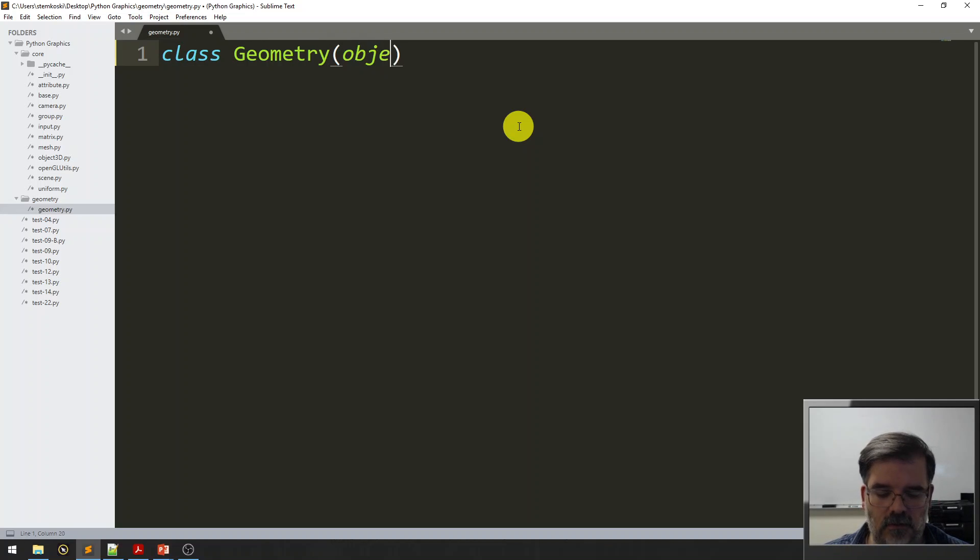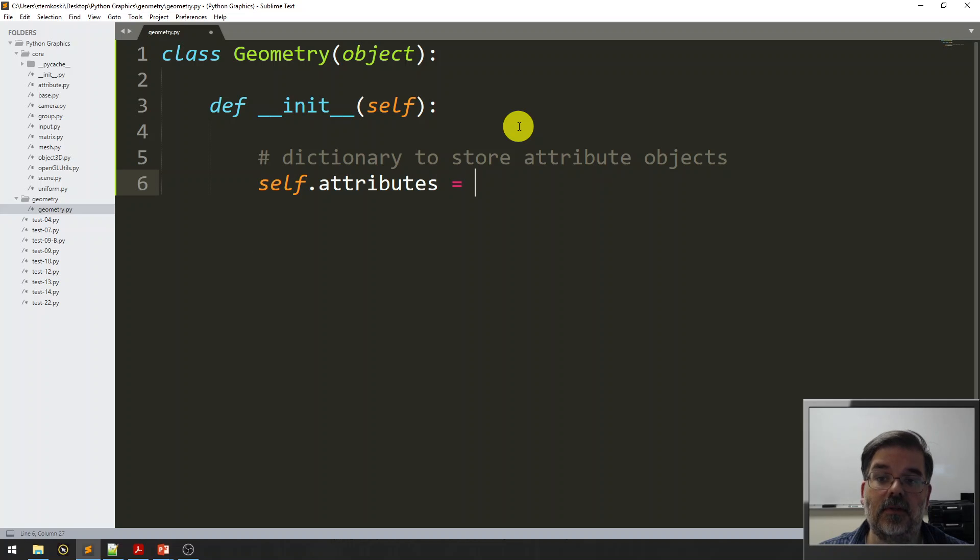This class is geometry. It's an object. And to initialize the geometry, we're going to store attribute objects. But I don't need to import the attribute class because the base geometry class doesn't actually create the attributes. It's just going to create a dictionary to store the attributes. A dictionary to store attribute objects. And we'll say self.attributes, plural, it'll usually be more than one. It's that dictionary.